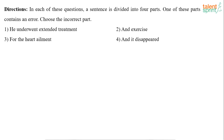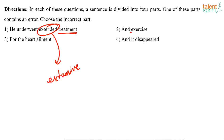So what are we supposed to do in each of these questions? A sentence is divided into four parts. One of these parts contains an error — choose the incorrect part. So the error spotting section. He underwent extended treatment and exercise for the heart ailment and it disappeared. When we are talking about a treatment, it is not 'extended treatment' — it is 'extensive treatment.' So the error is in part one.